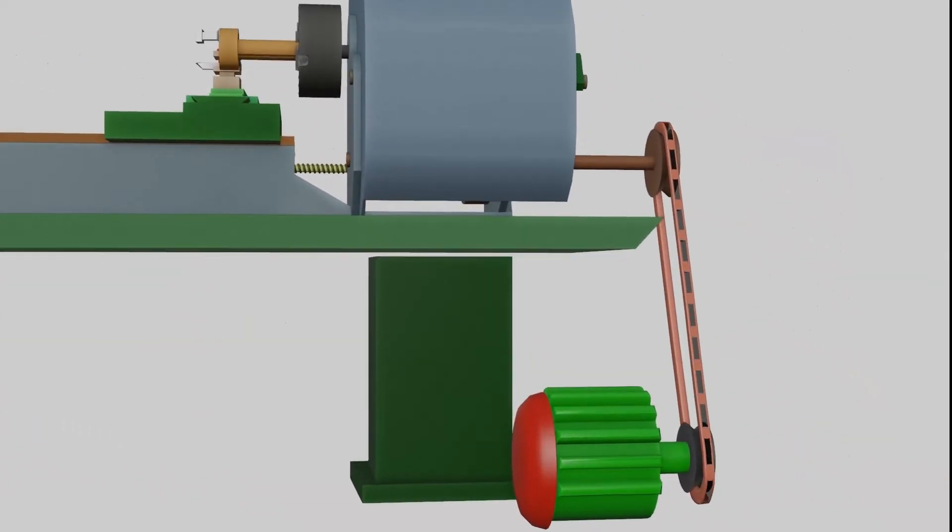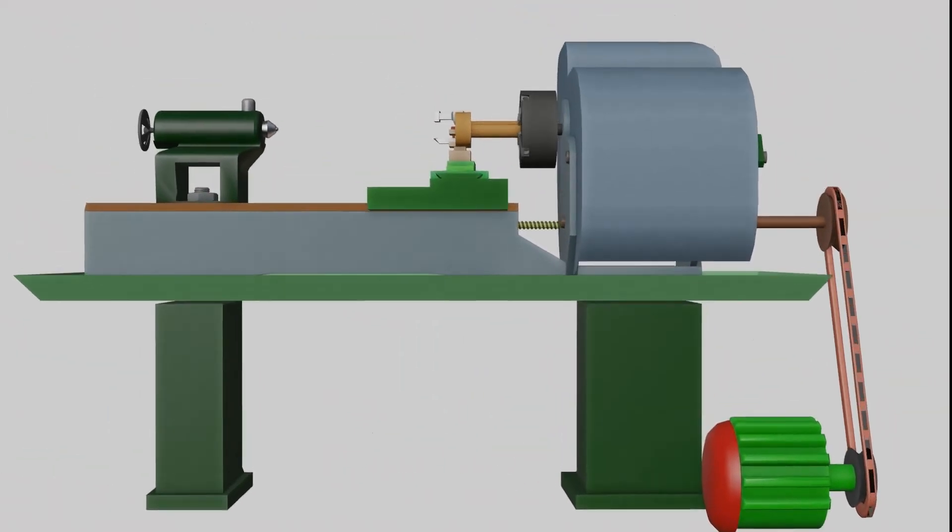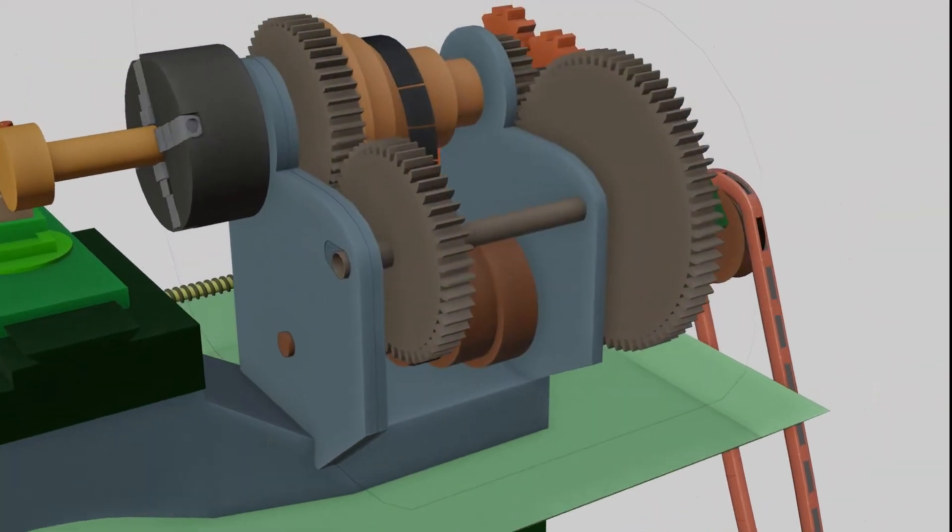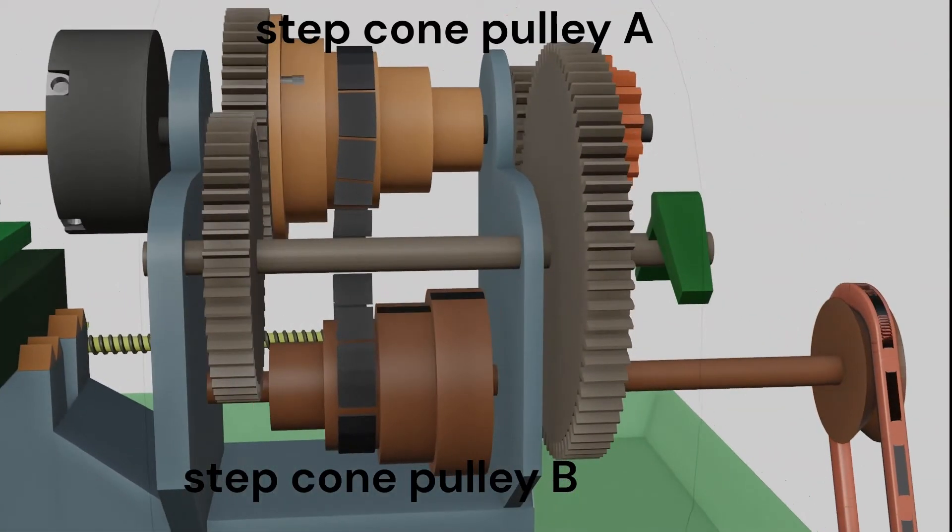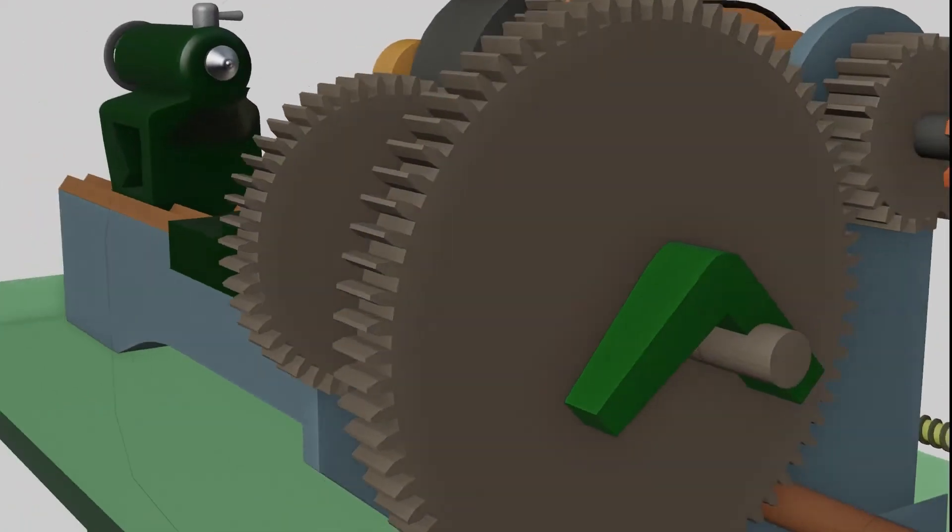Electric motor pulley and step cone pulley are connected through the belt. Two step cone pulleys are used to transfer power with different torque and speed. One pulley is connected to spindle and other pulley connected with motor. Both pulleys are connected with flat belt.